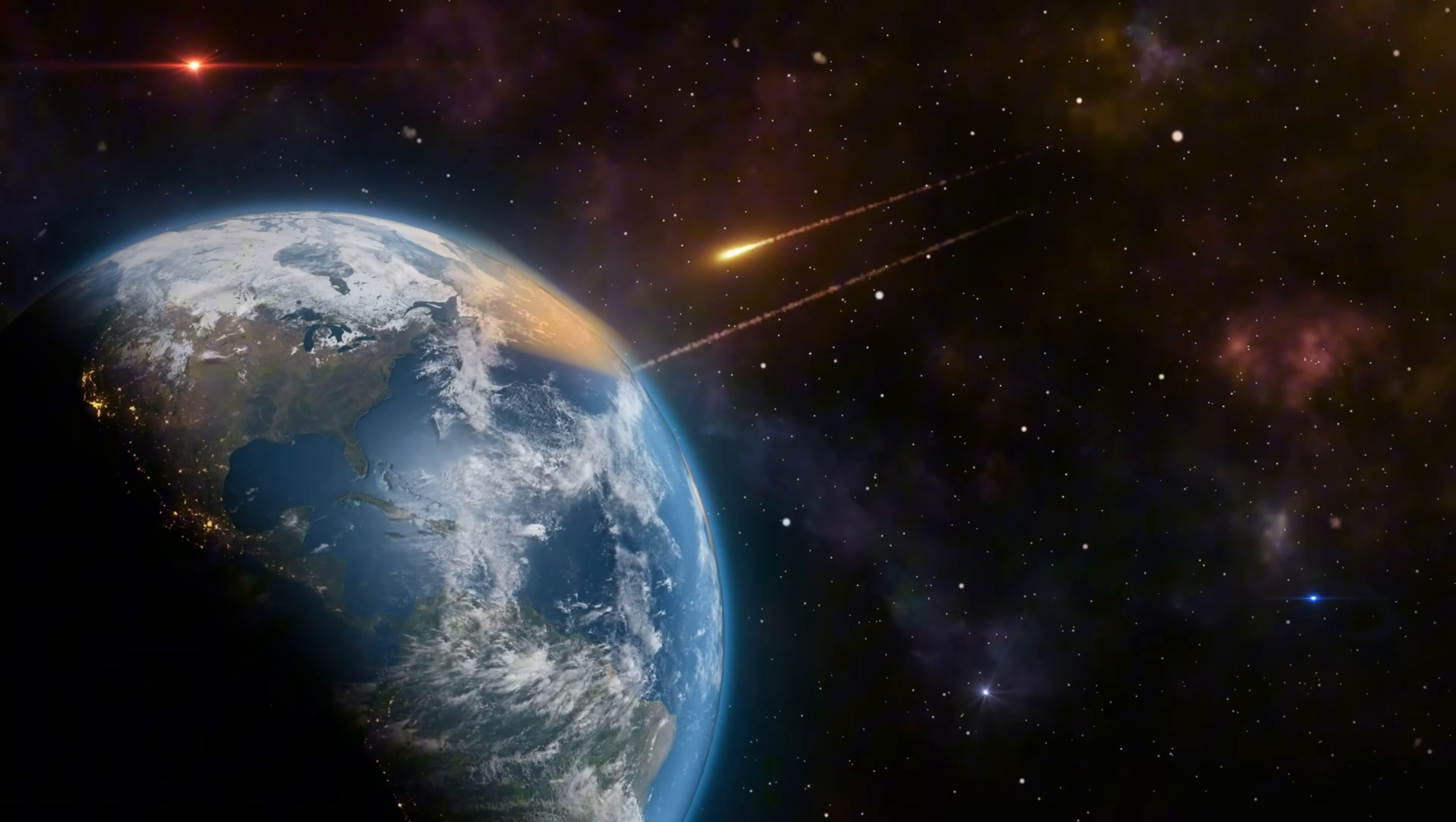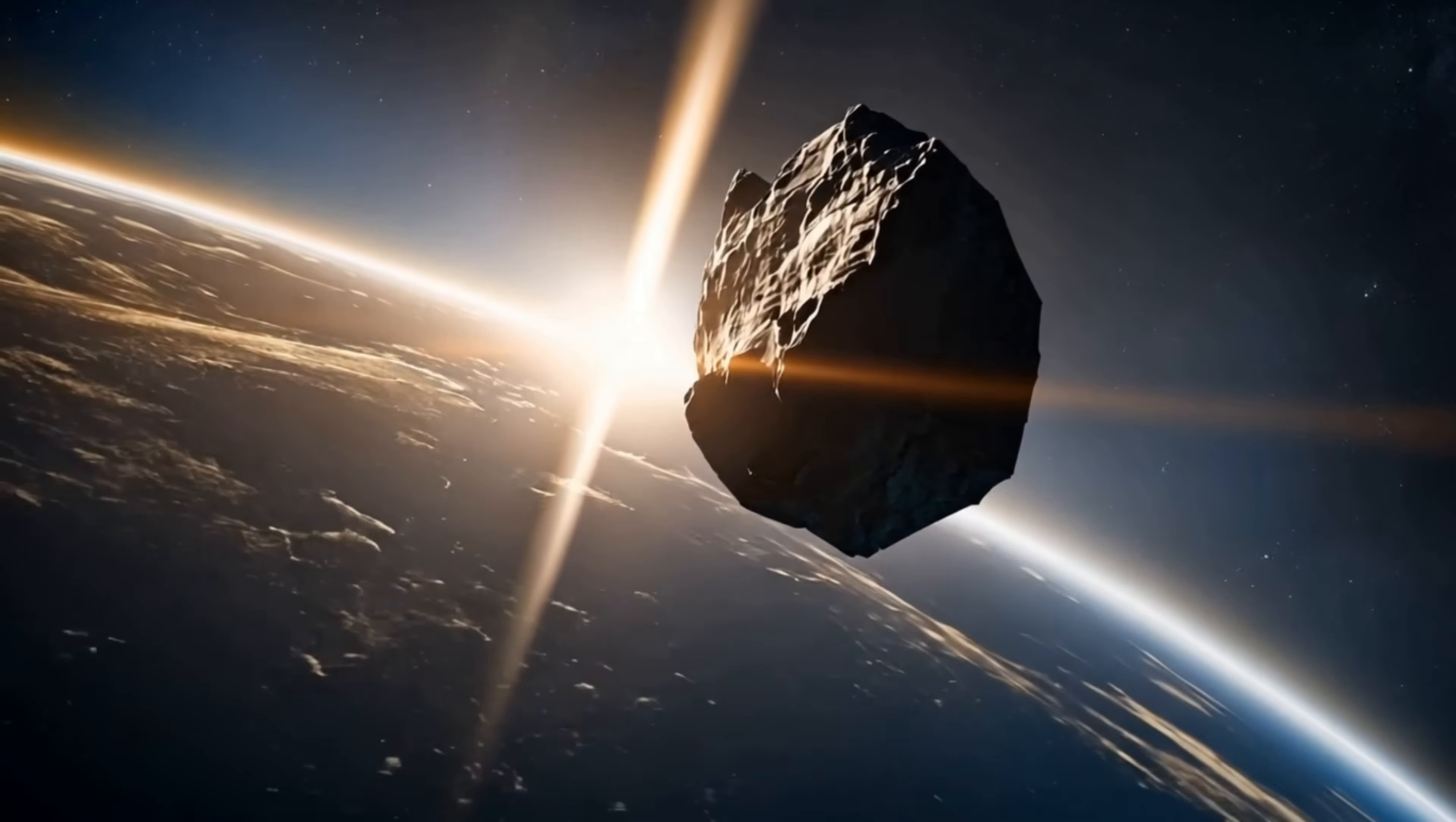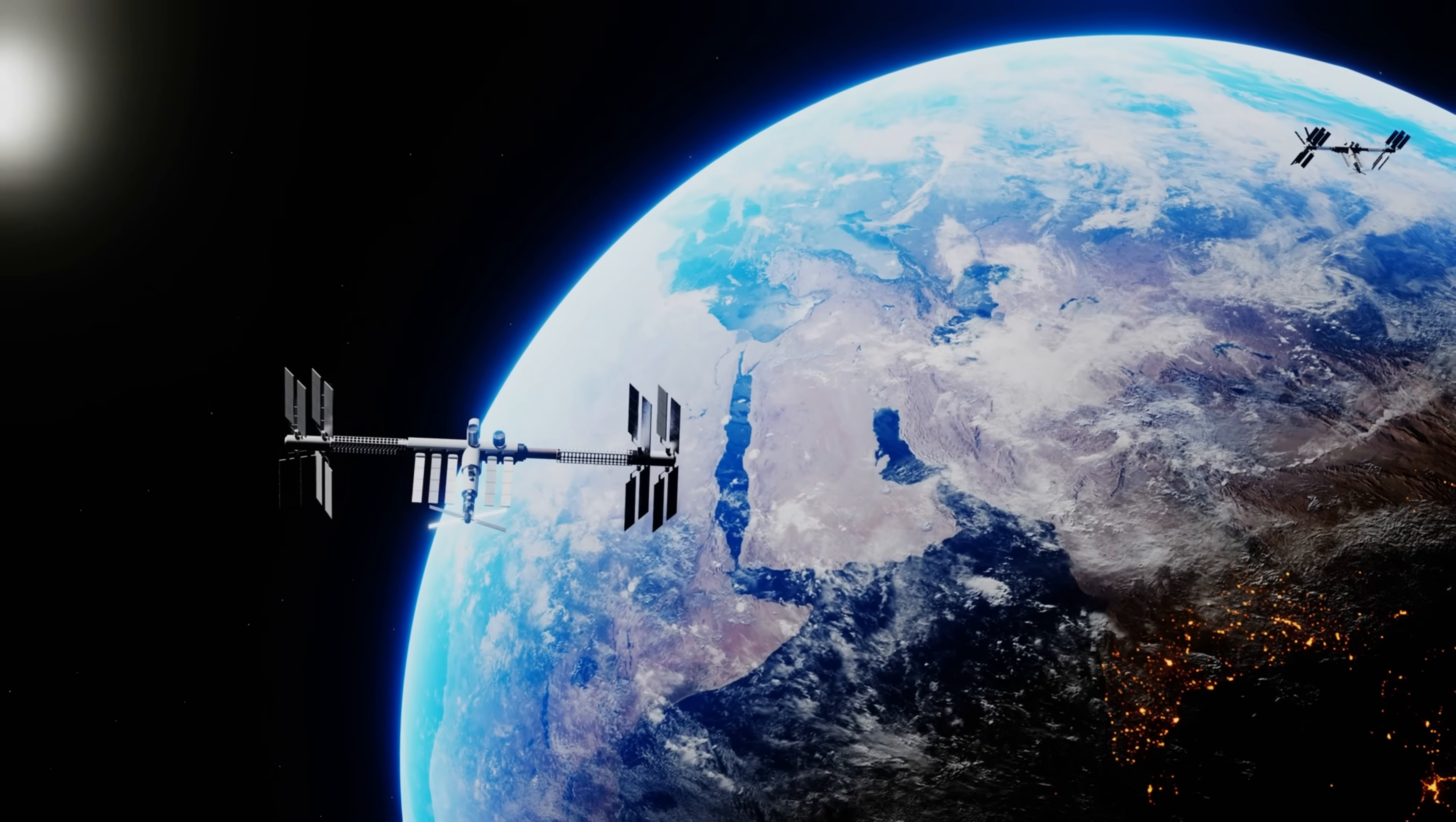A rock the size of a football field, flying at over 80,000 km per hour, slipped right by our planet, and NASA only spotted it after it was gone. So how did we miss it? How close did it really come? And what would have happened if it didn't miss?